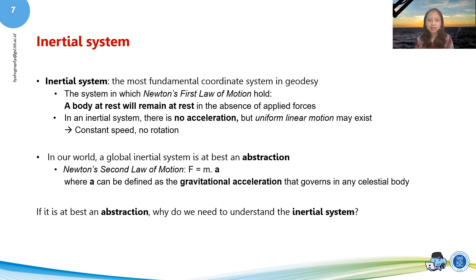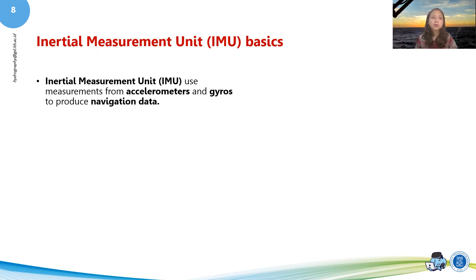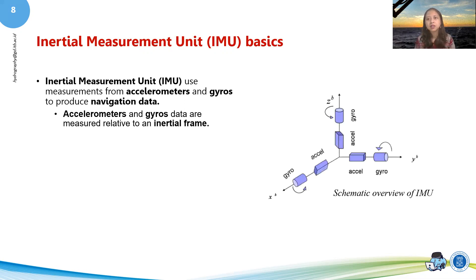So if it is at best an abstraction, why do we need to understand the inertial system? That's a very good question. That is because probably some of you have been familiar with something called inertial measurement unit or IMU. So IMU uses measurements from accelerometers and gyros to produce navigational data. And in fact, these accelerometers and gyros are measured relative to an inertial frame. So in a frame that makes no sense to us, but physically, it makes sense.